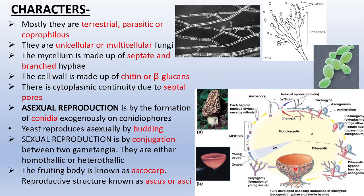Let us follow the sexual reproduction cycle: starting from the hyphae, which are septate — when it is time to reproduce sexually in a heterothallic species, there are plus and minus strains with some differences in their hyphae. Plasmogamy takes place, which is the union of cytoplasmic contents through a bridge connecting the two hyphae, resulting in a dikaryotic form where both nuclei remain together.